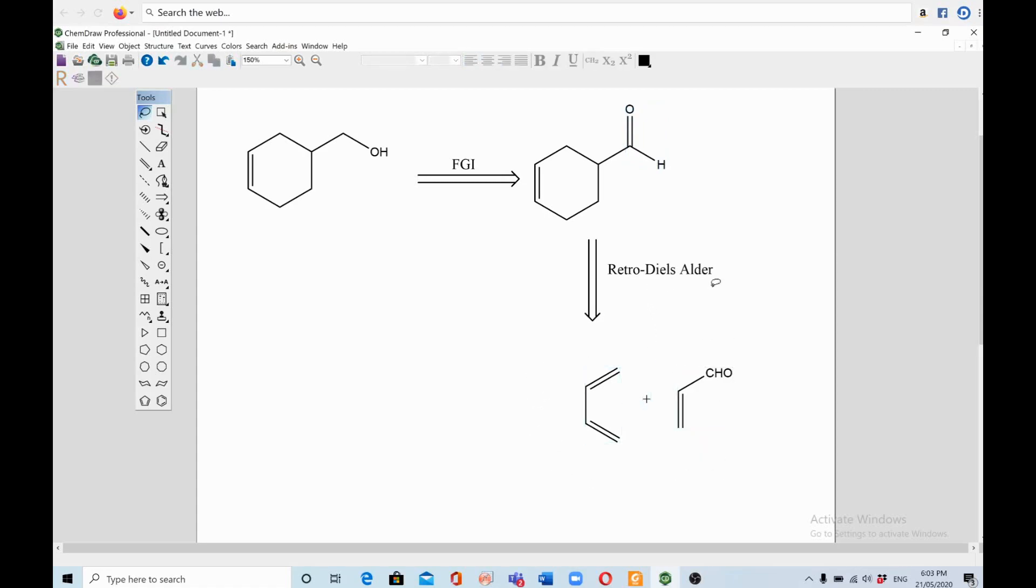Once these two via Diels-Alder reaction, they will be synthesized, so the synthesis will be quite simple. What you need to do, you mix these two reagents, they will give you this one. And when you reduce aldehyde by using any reducing agent.